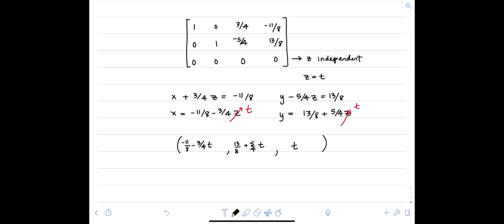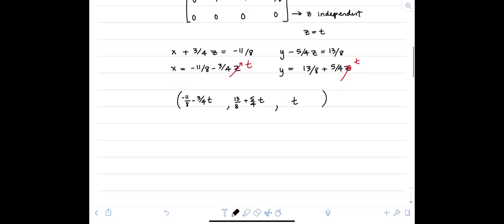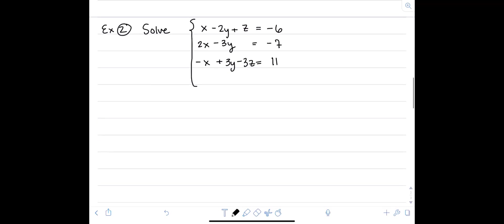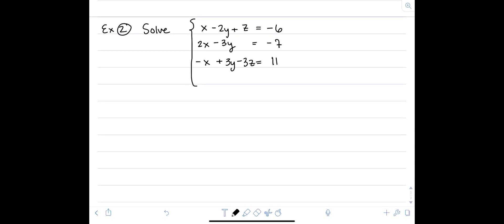Let's check out another example. Moving on to our next example, we're going to solve this system. x minus 2y plus z equals negative 6, 2x minus 3y equals negative 7, and negative x plus 3y minus 3z equals 11. So the one thing to remember is make sure to note that we are missing a z here. So when you enter this into your calculator, you're going to want to make sure to enter a zero in that position.